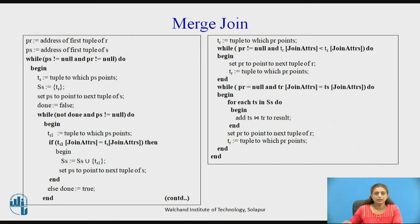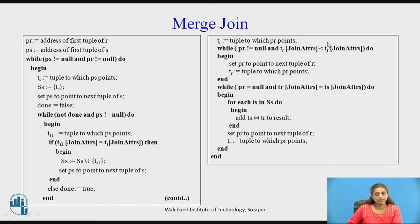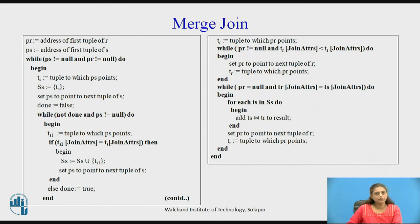Assume that id is the common attribute; we read all records from relation S having the same value for id. We take the first record into set S, then keep reading records of relation S while the value of the joining attribute is the same. Once we have found all tuples with the same value for the join attribute, we do the comparison with relation R. The tuple pointed by PR is compared with all tuples gathered in set S, and those satisfying the condition are added to the result.